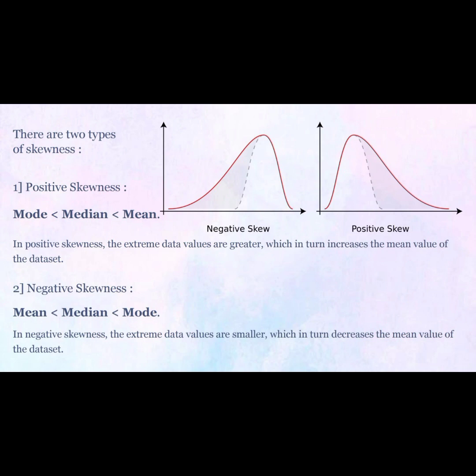There are two types of skewness. One: positive skewness — mode less than median less than mean. In positive skewness, the extreme data values are greater, which in turn increases the mean value of the data set. Two: negative skewness — mean less than median less than mode. In negative skewness, the extreme data values are smaller, which in turn decreases the mean value of the data set.